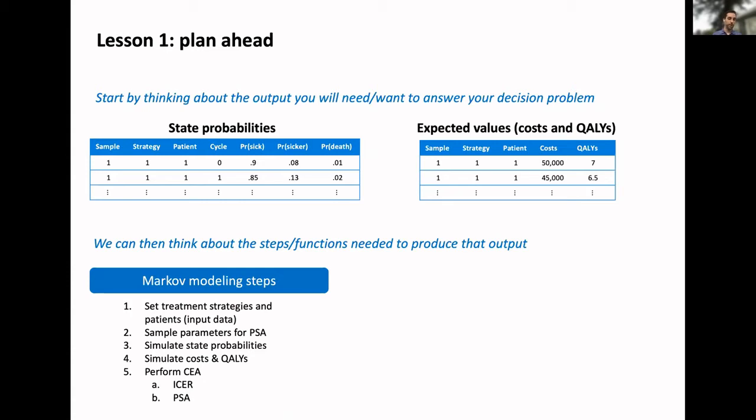If we think about the output we want, we could think about the steps or functions we need to produce it. What would we need in this modeling scenario? We might start by defining our treatment strategies and patients. Remember, we have five strategies, 10 representative patients. We'll then need to sample the parameters for a probabilistic sensitivity analysis. Given that input data and parameters, we can simulate our state probabilities in a Markov framework, simulate costs and qualities, and then finally perform a CEA, perhaps in a PSA framework.